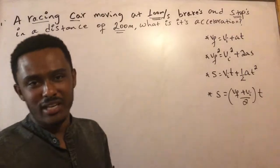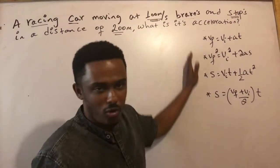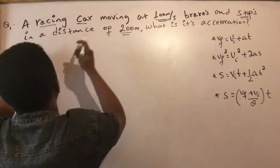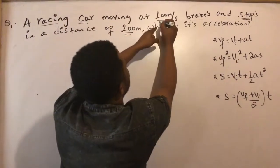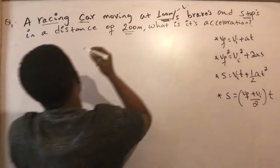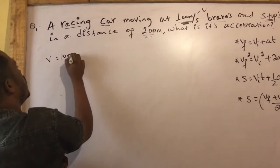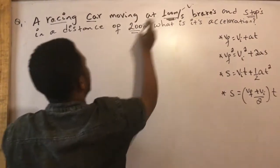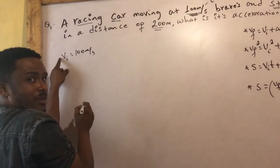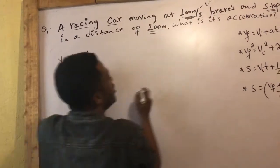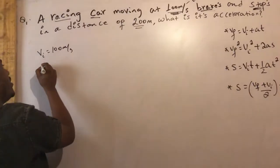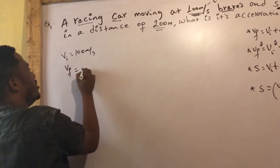If you want to find acceleration, look at the formula. The racing car is moving at 100 m/s, so V initial is 100. It brakes and finally stops, so V final is zero.